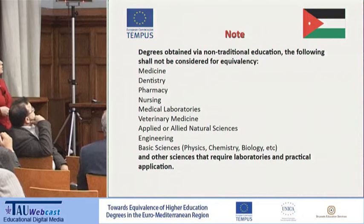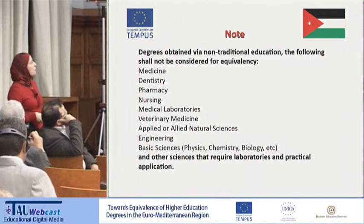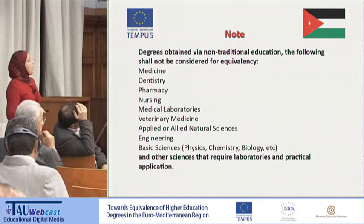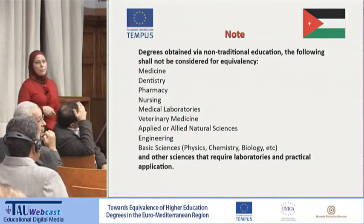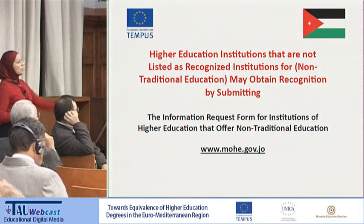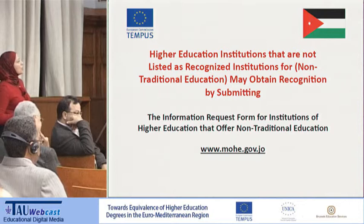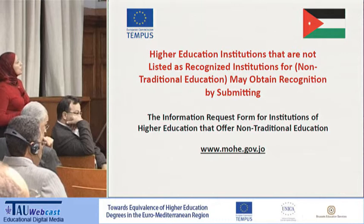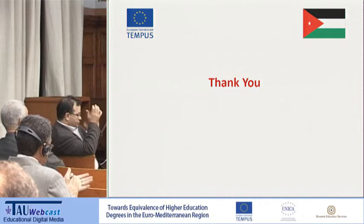We also have some restrictions. Degrees obtained via non-traditional education shall not be considered for equivalency in medicine, pharmacy, nursing, and other sciences that require laboratories and practical application. Higher education institutions not listed as recognized for non-traditional education may obtain recognition by submitting the information request form for institutions that offer non-traditional education. Thank you for listening.